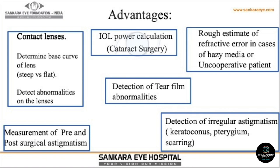The advantages and uses of the manual keratometer include: IOL power calculation for cataract surgery; contact lens fitting to determine the base curves for RGP or soft hydrogel lenses; detecting abnormalities over contact lenses; follow-up of long-term contact lens use to check for changes in radius of curvature; measuring pre- and post-surgical astigmatism after graft or cataract surgery; detecting tear film abnormalities via distorted mires, in which case a drop of lubricant is applied and keratometric values rechecked; and providing a rough estimate of refractive error in cases of hazy media or in uncooperative patients.